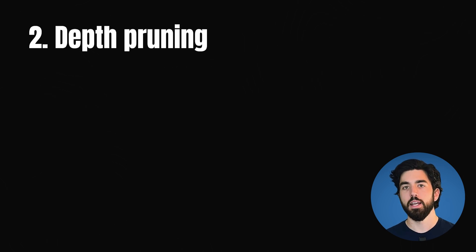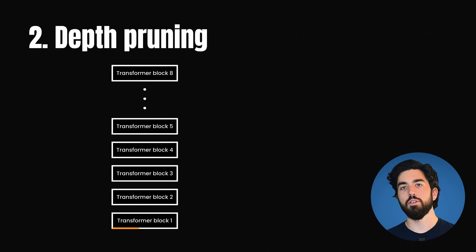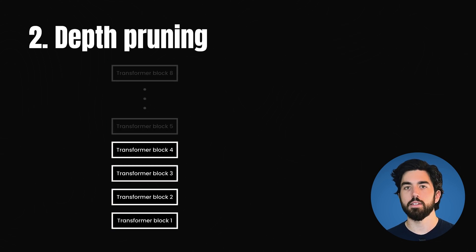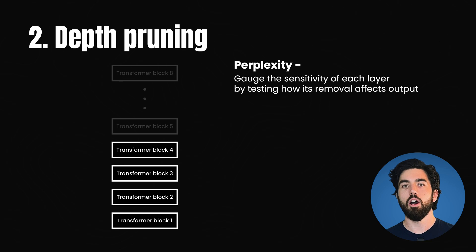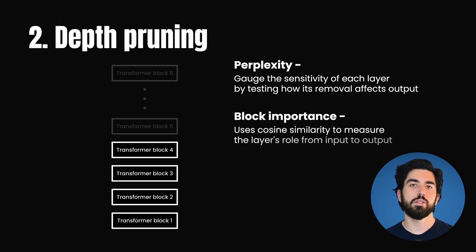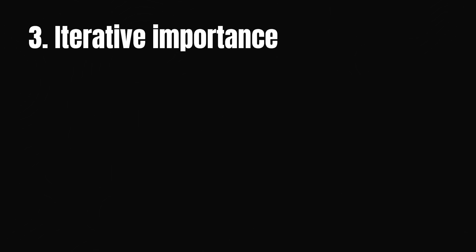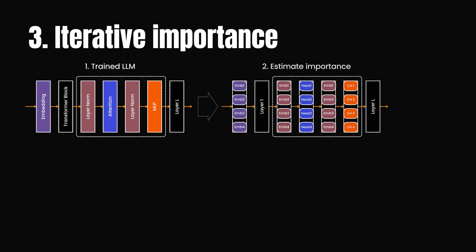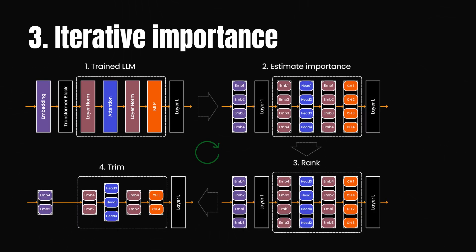Then we have depth pruning. This method measures the importance of entire layers using metrics like perplexity and block importance. Perplexity helps gauge the sensitivity of each layer by testing how its removal affects output. Block importance uses cosine similarity to measure the layer's role from input to output. Lastly, iterative importance involves pruning and recalculating importance step by step, gradually reducing size while recalculating importance to ensure consistent pruning over multiple steps.